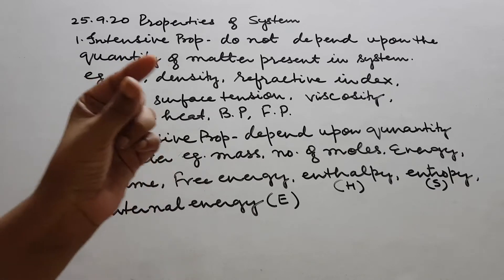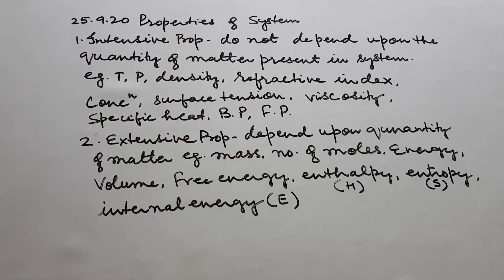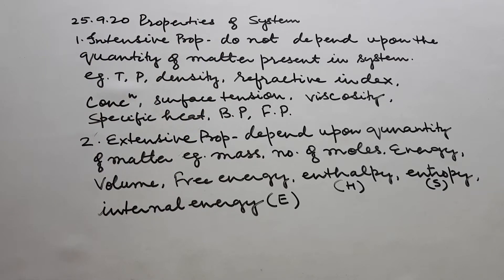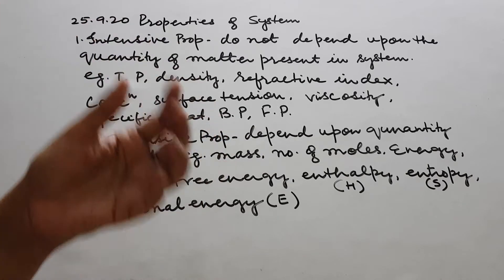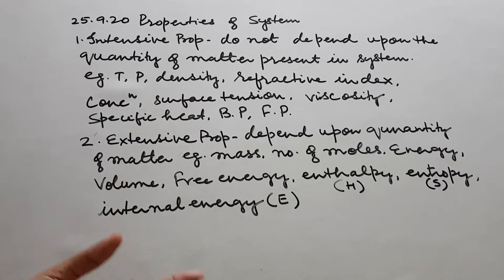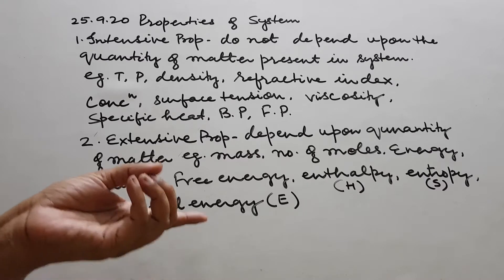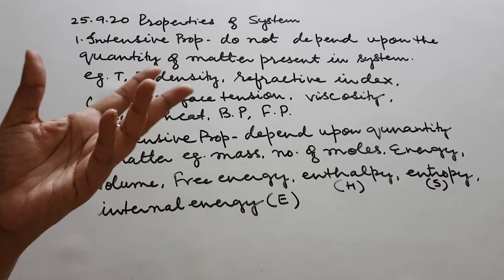Refractive index: a small piece or big piece of glass will have the same refractive index. Then concentration, like normality — a 50 ml solution can have the same normality as 10 liters of solution, because normality is the number of gram equivalents per liter. So it does not depend upon the quantity.